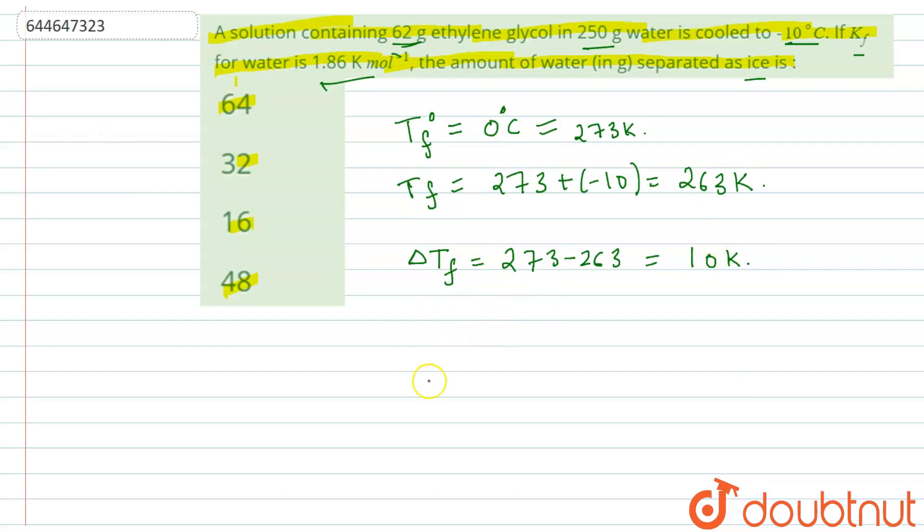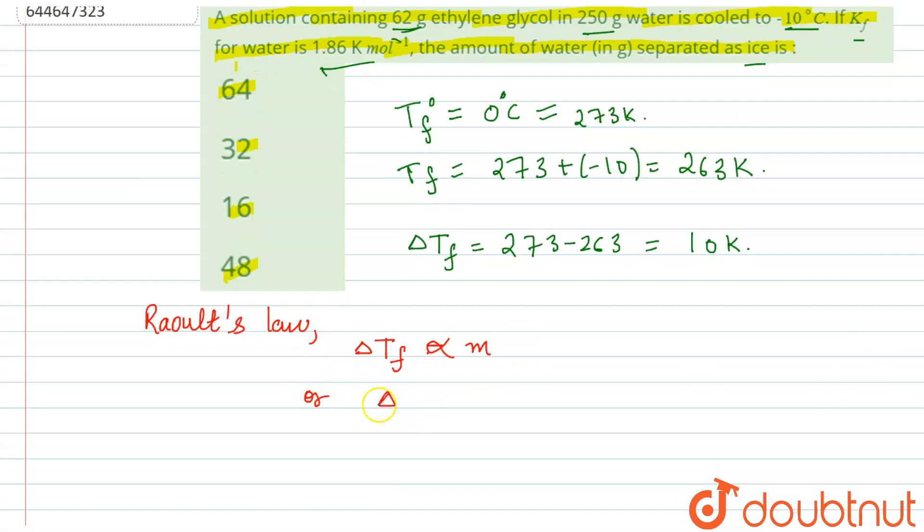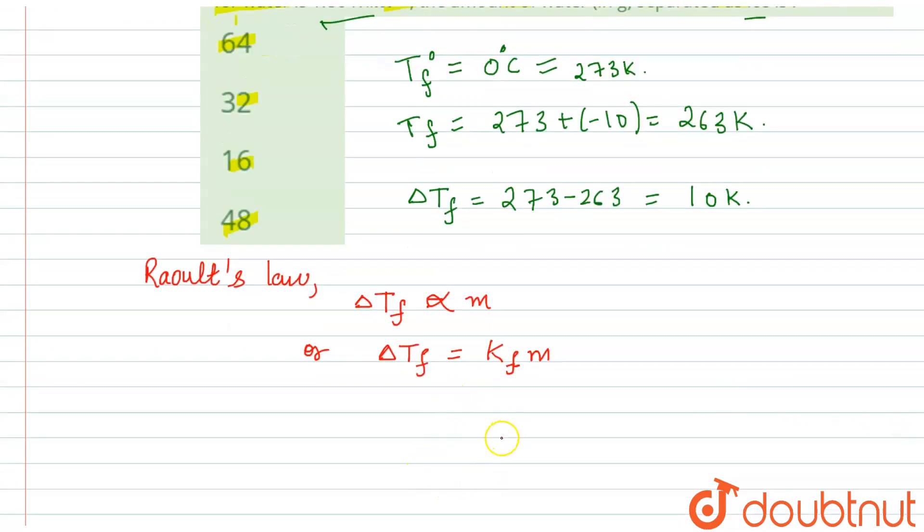According to Raoult's law, you can write this as: depression in freezing point, that is delta Tf, is directly proportional to the molality of the solution. Or the relation becomes delta Tf is equals to Kf into M, where Kf is the molal depression constant.